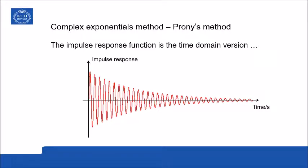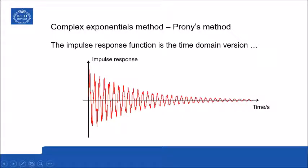This first curve shows the contribution from one single mode to the impulse response. When the second mode is added, you see that the shape of the curve is a bit more rough, and that is due to the interaction between two sines with different oscillation rates.